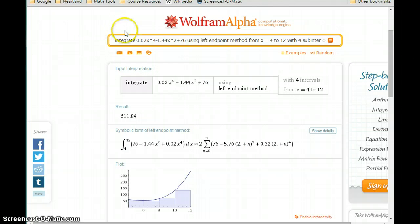Switching back to Wolfram Alpha, we can still ask it to integrate our function, which in this case is 2t cubed plus 7t, using the trapezoid method from x equals 0 to 2 with 4 sub-intervals.